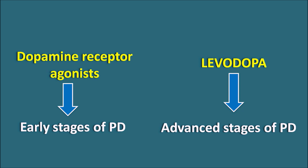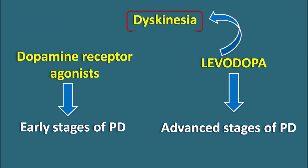In patients with age less than 65, dopamine receptor agonists are given, whereas in patients with age greater than 65, levodopa is given. Even though levodopa is highly effective, one of its important side effects is dyskinesia — a disturbance in kinetic movements — which is less observed with dopamine receptor agonists. That's why in the early stage of Parkinson's disease, dopamine receptor agonists are preferred as they produce less dyskinesia, thereby delaying the requirement for levodopa treatment. In the advanced stage, levodopa is preferred because dopamine receptor agonists are somewhat less effective.